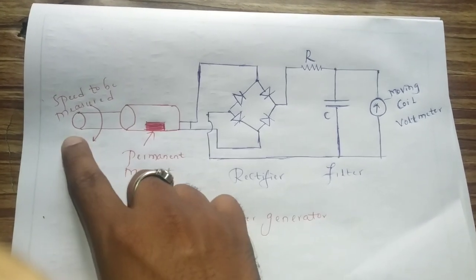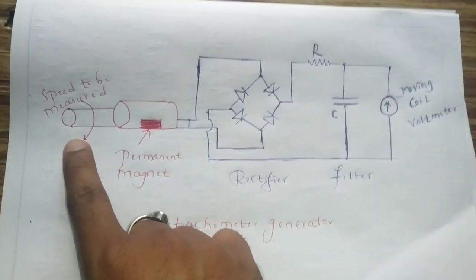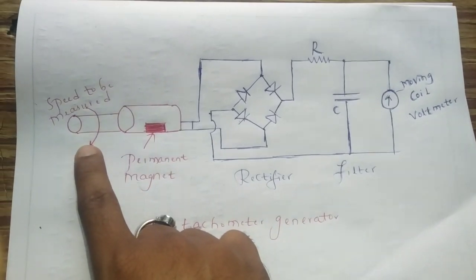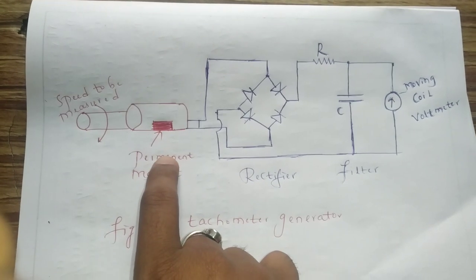The machine whose speed is to be measured is coupled with a rotating magnet.